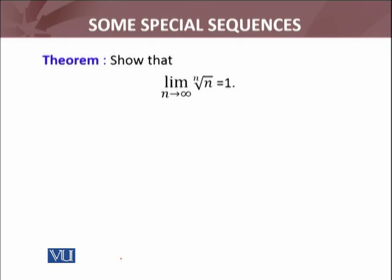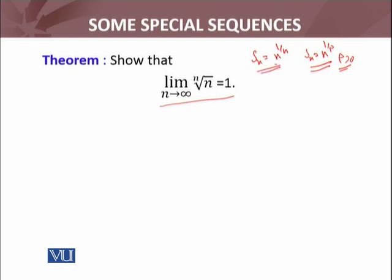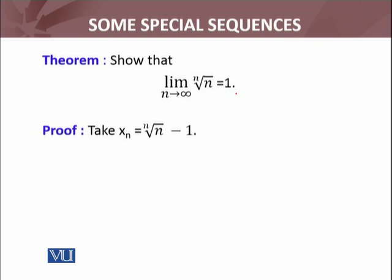The first sequence: show that the limit as n approaches infinity of n^(1/n) equals 1. Remember that last module mein humne s_n equals n^(1/p) discuss kiya tha, where p is any real number greater than 0. We discussed 3 cases for that. The technique for this sequence is almost the same — in order to prove that this sequence, whose nth term is n^(1/n), is convergent to 1.